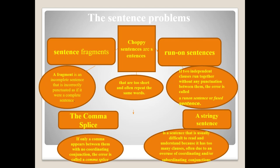The comma splice is said to be the most common type of sentence error, but that should be good news — it is an error that is easy to identify and fix. A comma splice occurs when two independent clauses are joined together with only a comma.